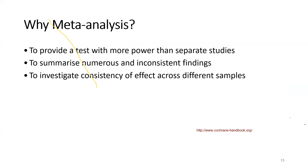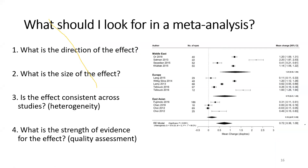Why do we do a meta-analysis? A meta-analysis, when you're able to do one, is good because it provides a test with more power than separate individual studies. You can summarize findings and investigate consistency of effect across different samples — which relates back to the question about heterogeneity.